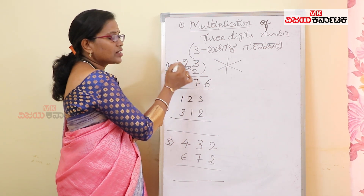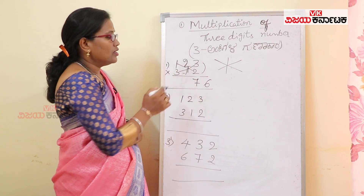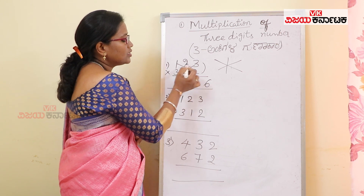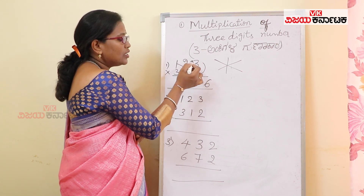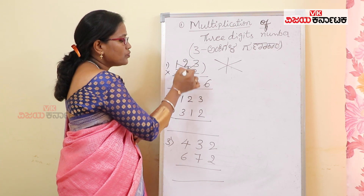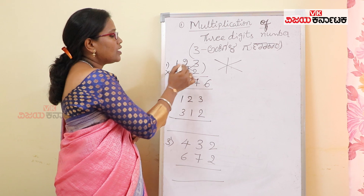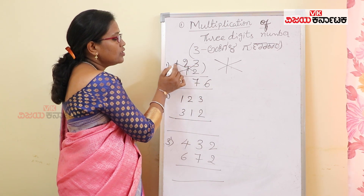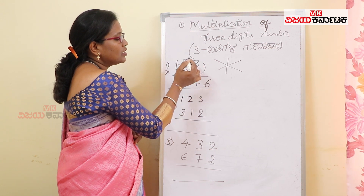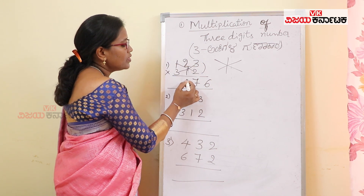We will cross-multiply and add the product. For example, 1 times 2 is 2, plus 3 times 3 is 9. So 9 plus 2 is 11. And plus 2 times 1 is 2. So 11 plus 2 is 13. That is, 1 plus 2 plus 9 plus 1 is 13.